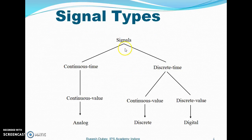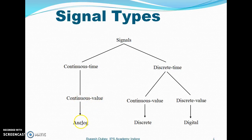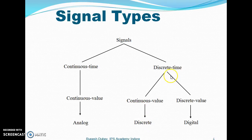These are some of the types of signals. Signals can be continuous or discrete. Continuous time signals which also have continuous values are called analog signals. Discrete time signals which have continuous values are called discrete signals. Discrete time signals which have discrete values are called digital signals.